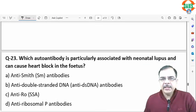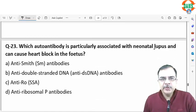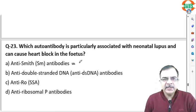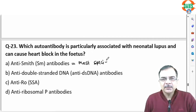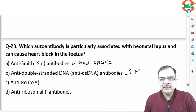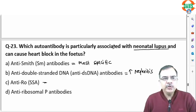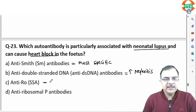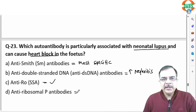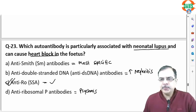Question 22: which antibody is associated with neonatal lupus? Anti-Smith is the most specific antibody for SLE. Anti-dsDNA increases the risk of nephritis. Anti-Ro (SSA) is associated with neonatal lupus and heart block in the fetus. Antiribosomal antibody is associated with psychosis and CNS manifestations. The answer is option C — Anti-Ro.